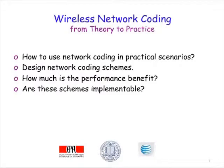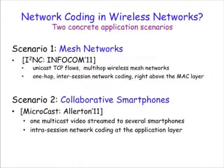This presentation is an overview of our work on wireless network coding. We are interested in applying network coding ideas to improve the performance of wireless networks in practice. We design novel network coding schemes, evaluate their performance, and try to understand to what extent these schemes are implementable in practice. So far we have identified two concrete scenarios: the first in the context of wireless mesh networks and the second in the context of collaborative smartphones.